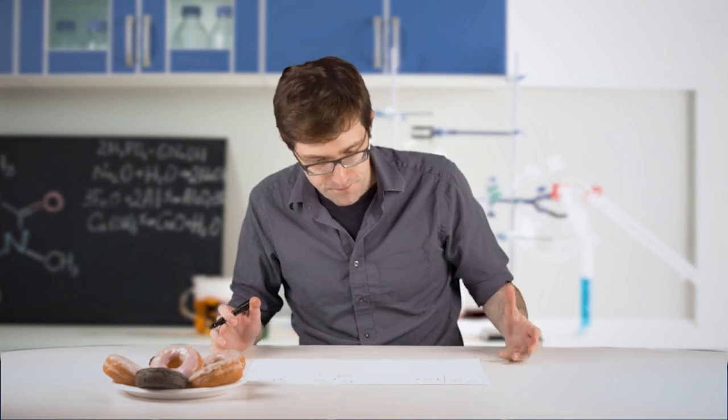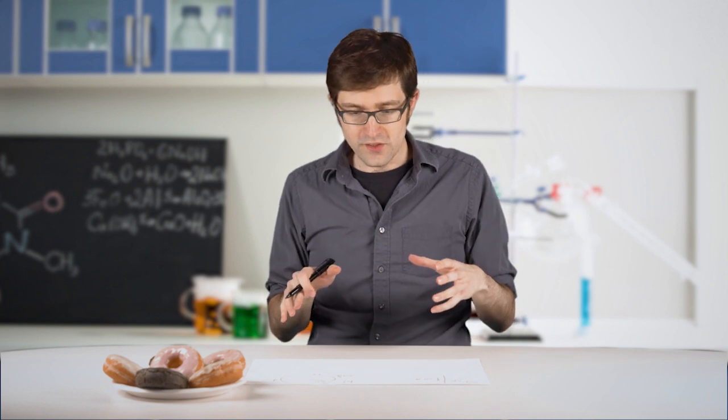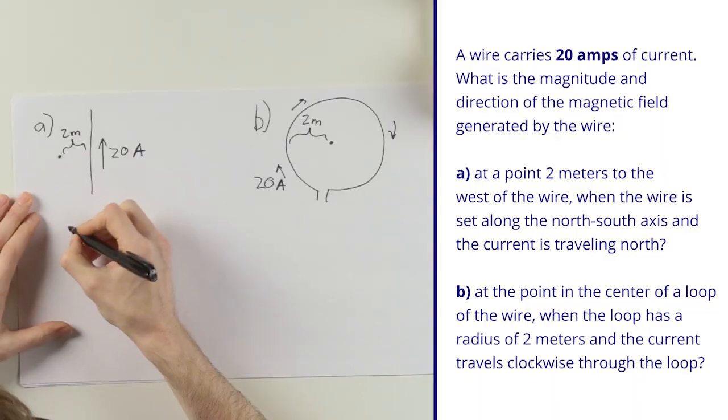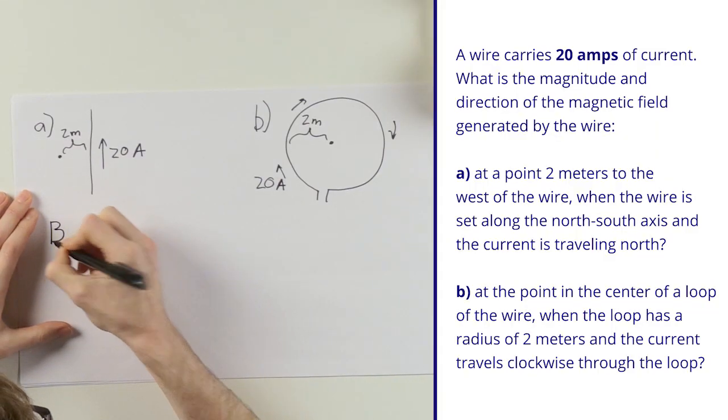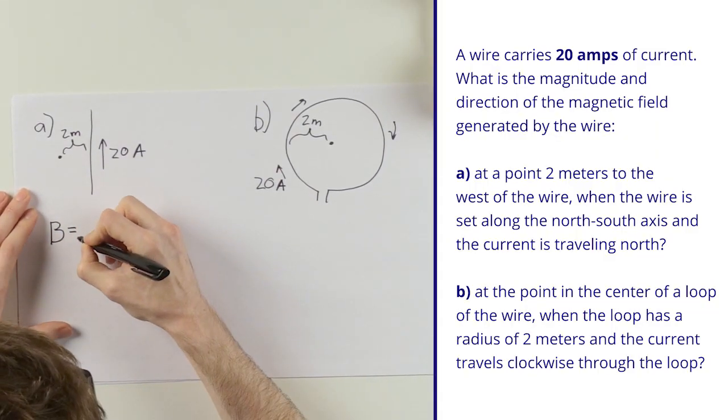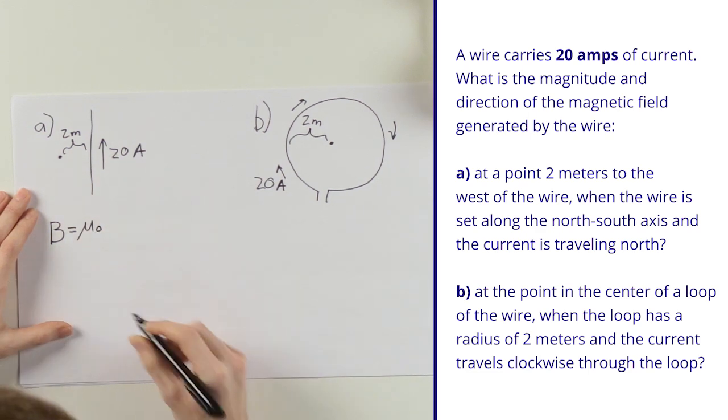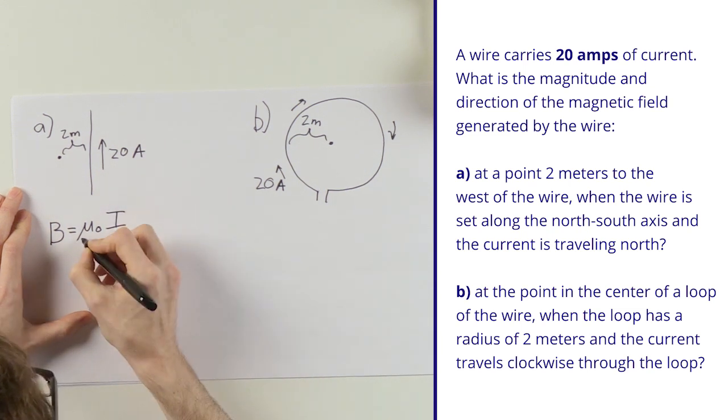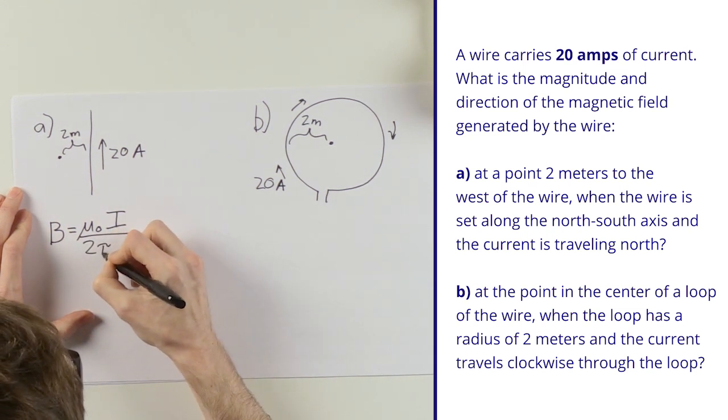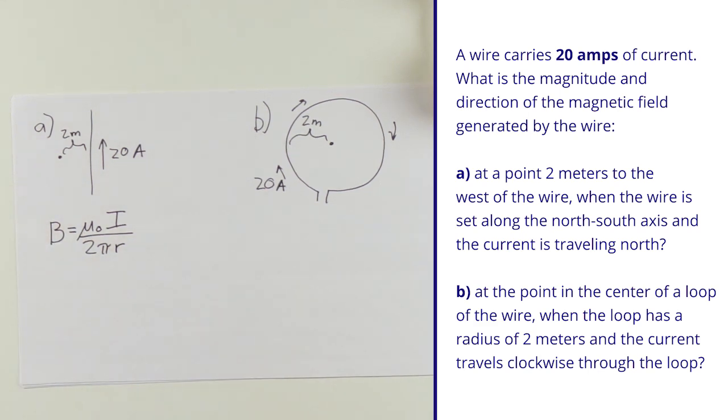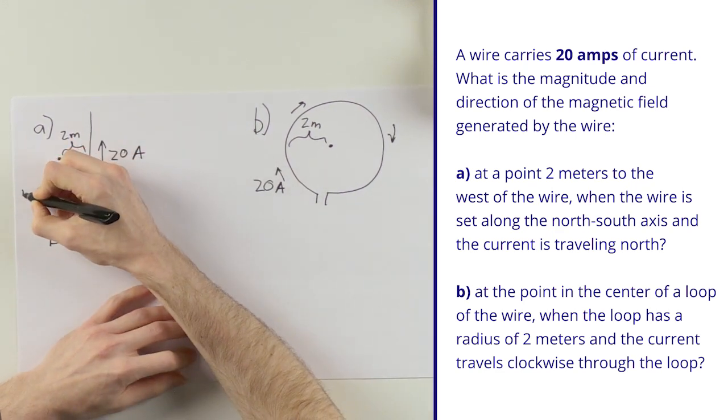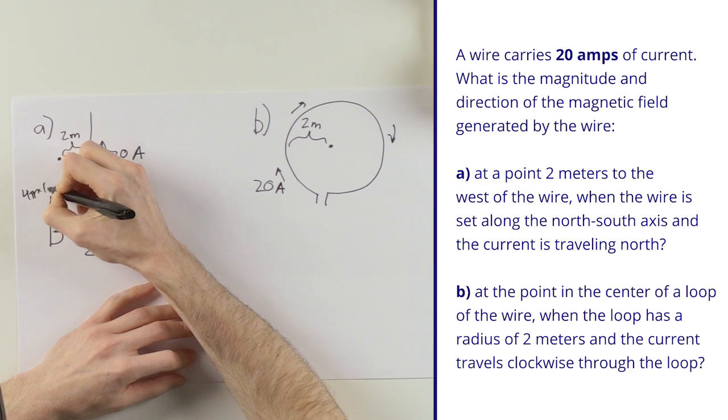Now I know what the setup here is, it's time for me to take out some formulas. The formula I need here for the current carrying straight wire is B magnetic field equals the permeability of free space times current over 2πr. We've got a couple different constants in this one. The permeability of free space is actually equal to 4π times 10 to the negative seventh.